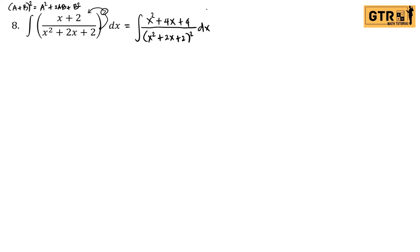It is in the form of case 4 because the quadratic trinomial is irreducible. The factors of positive 2 are only 2 and 1, and from 2 and 1, we cannot form a sum of positive 2. So the denominator is irreducible, therefore it is case 4.